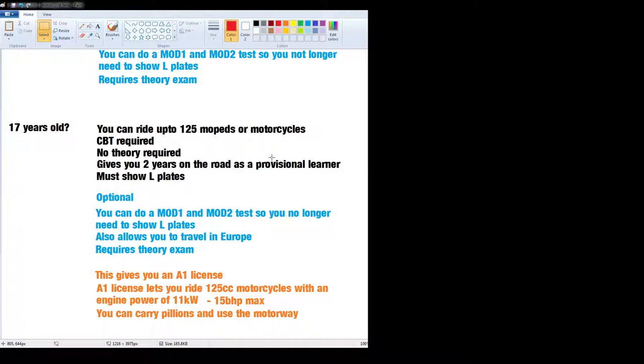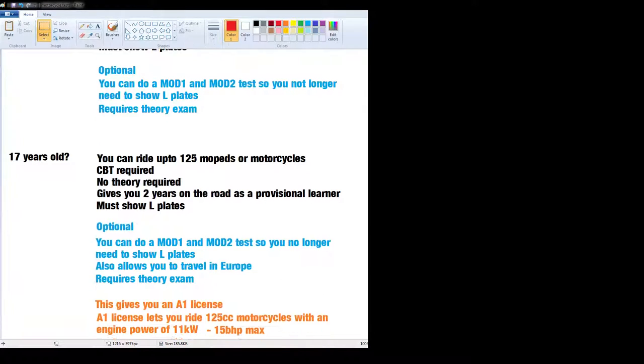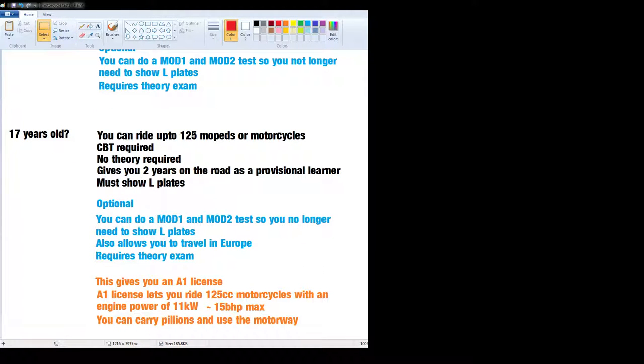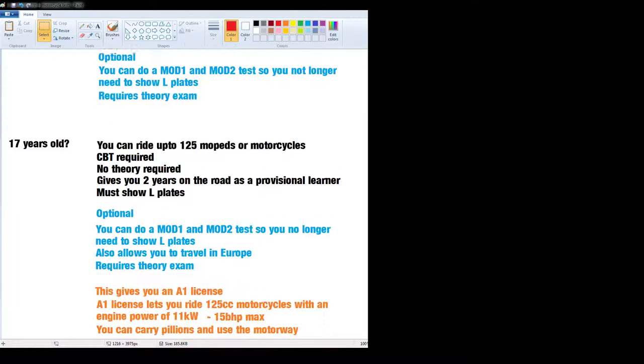This requires a theory exam for the whole thing. This will give you an A1 license. The A1 license lets you travel in Europe, lets you ride a 125 motorcycle with an engine power of 11 kilowatts or 15 brake horsepower max. You can carry pillions and use the motorway. So, you see the advantages from a 50cc moped that you can't take on the motorway. The only benefit you're getting from doing your Mod 1 and Mod 2 test at 16 is you don't have to show L-plates. It's pointless, it's a waste of money. At 16 anyway, I wouldn't even bother. I'd just wait until you're 17 and then go and get your 125.